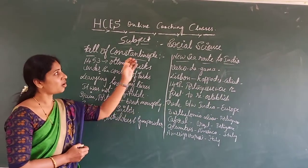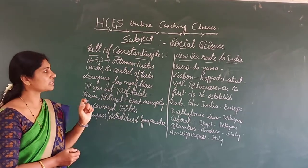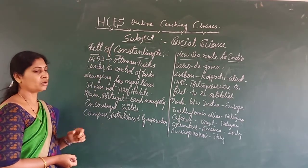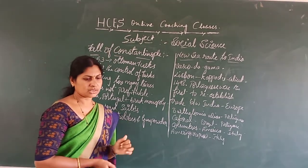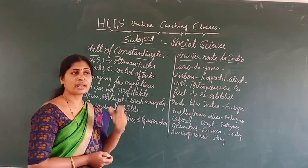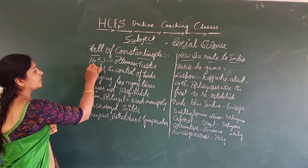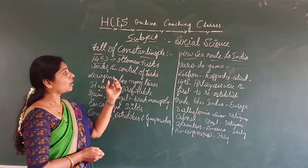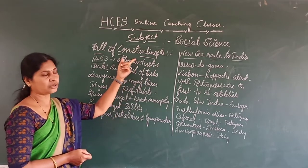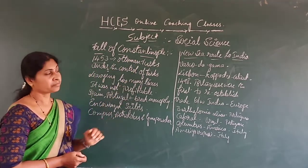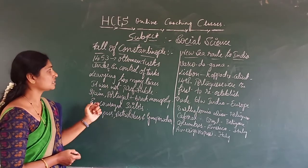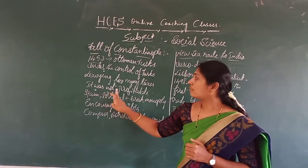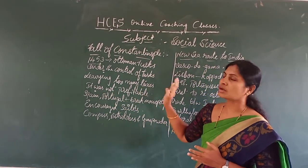What is the main reason to find alternative sea routes to India — that is what we are going to discuss in today's class. The fall of Constantinople. Already I told you that Constantinople was called the gate of European trade. In the year 1453, the Ottoman Turks captured Constantinople, and it came under the control of the Turks.